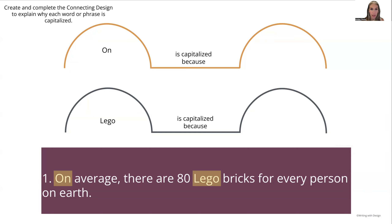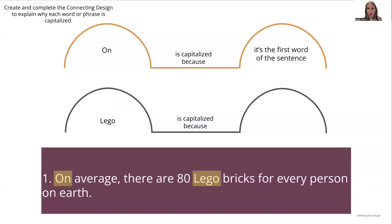Here's our first sentence: 'On average, there are 80 Lego bricks for every person on Earth.' We scan through and find the capitalized words: 'On' and 'Lego.' Students highlight them on their papers, then put them into a connecting design. 'On is capitalized because...' — students review the four rules and go down the line. Is it the first word of the sentence? Yes, it is. That's why it's capitalized. Easy peasy. And that one, spoiler alert, is going to be on every sentence.